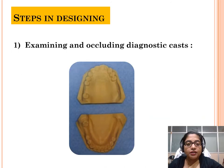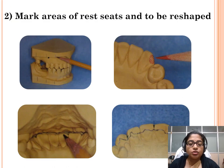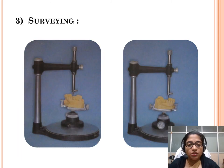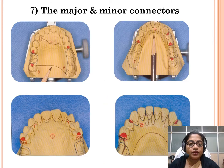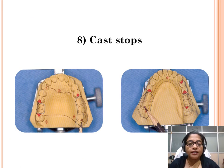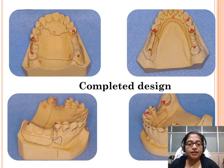In the step-by-step design procedure, we first examine the occluding diagnostic casts, then mark the areas of rest seats and areas to be reshaped with a red pencil. We then perform the surveying, mark the denture base extensions, draw the major and minor connectors, draw the clasp assemblies, and finally formulate the retentive elements and reciprocal elements. This is how the completed design looks.